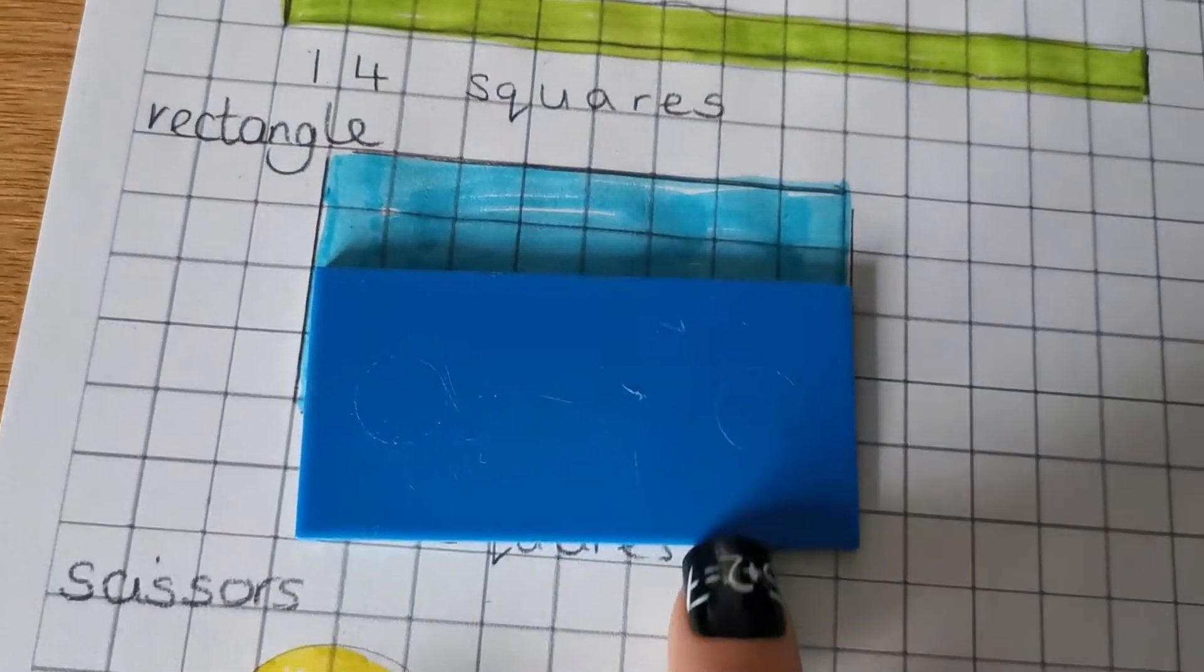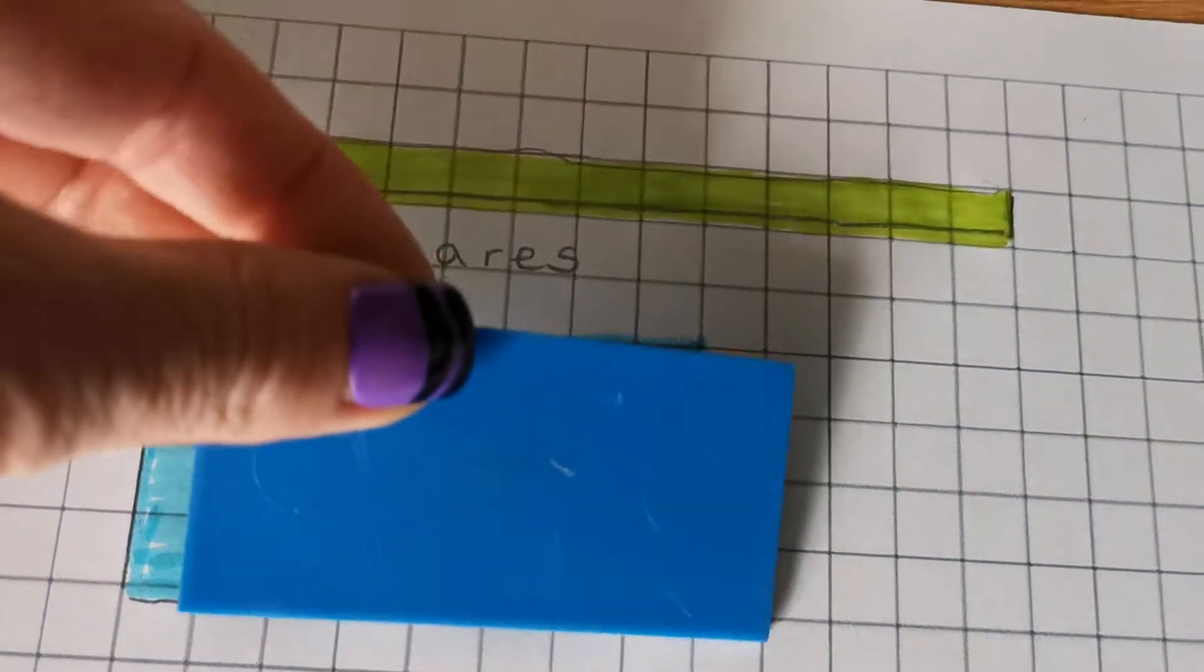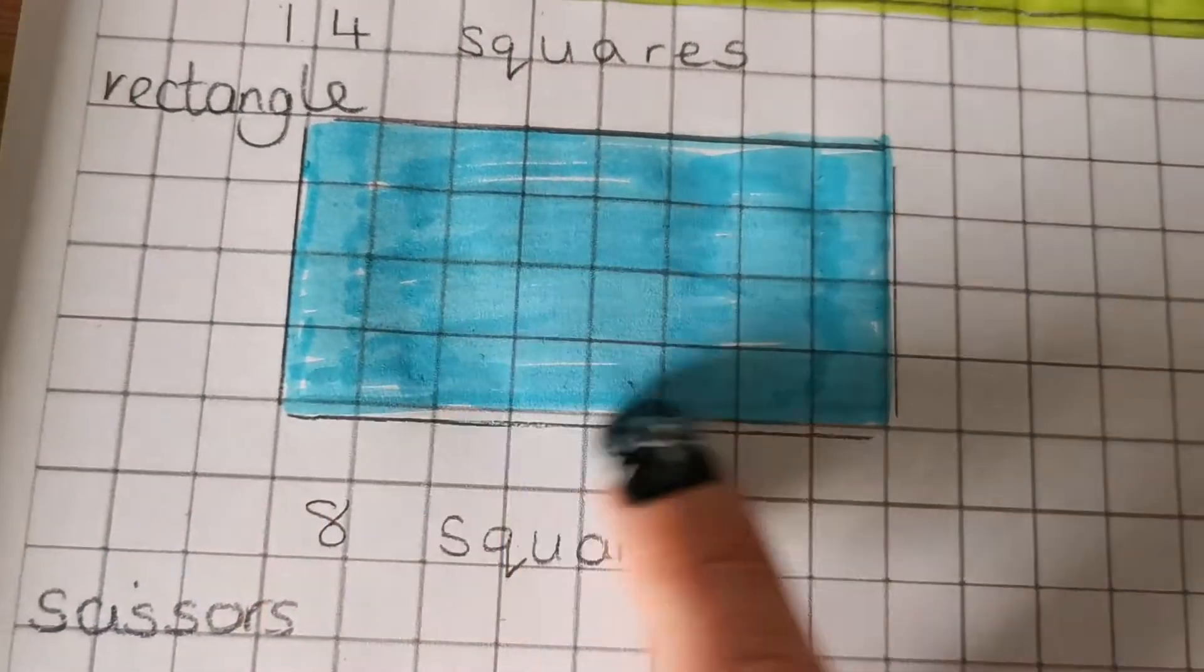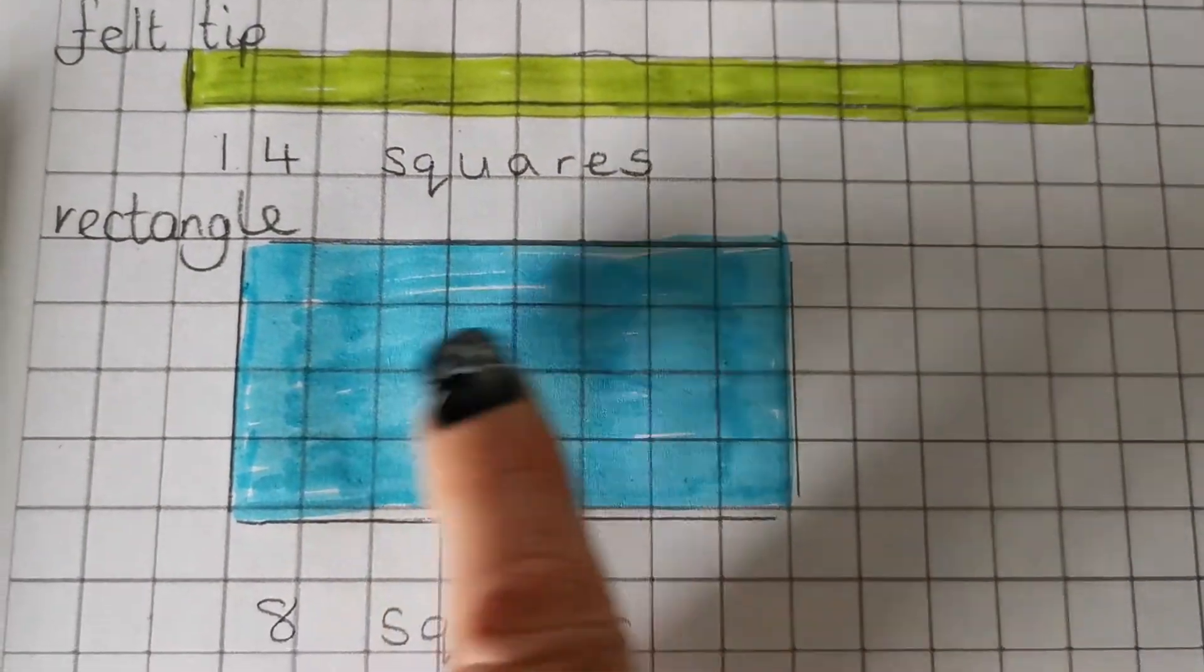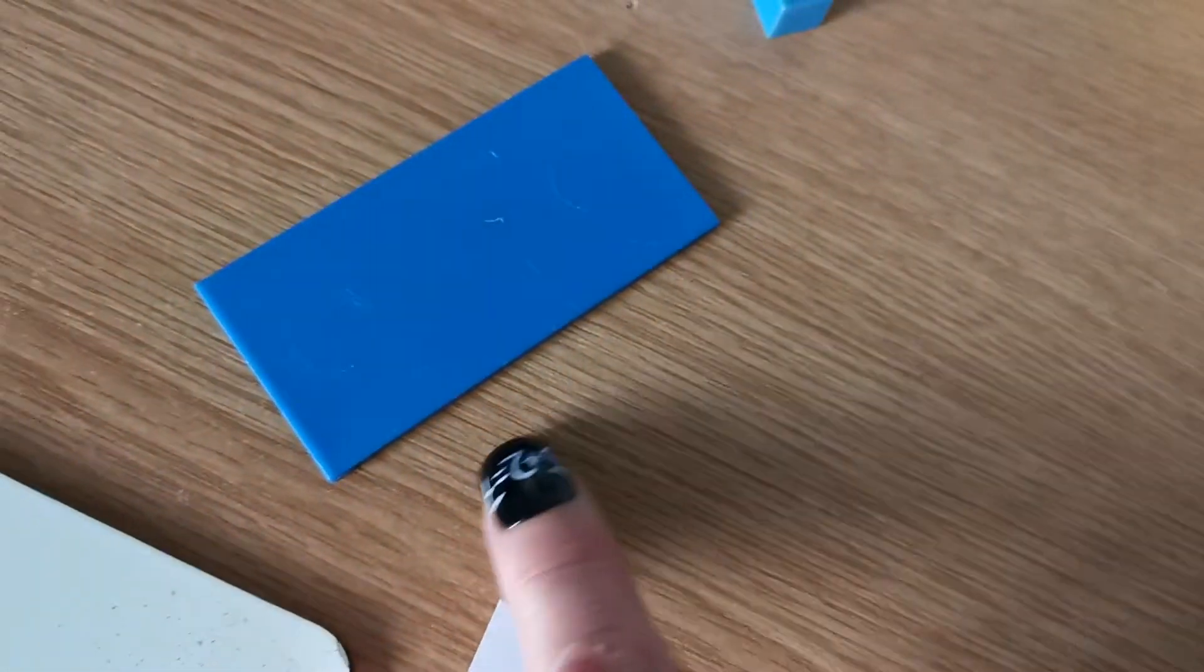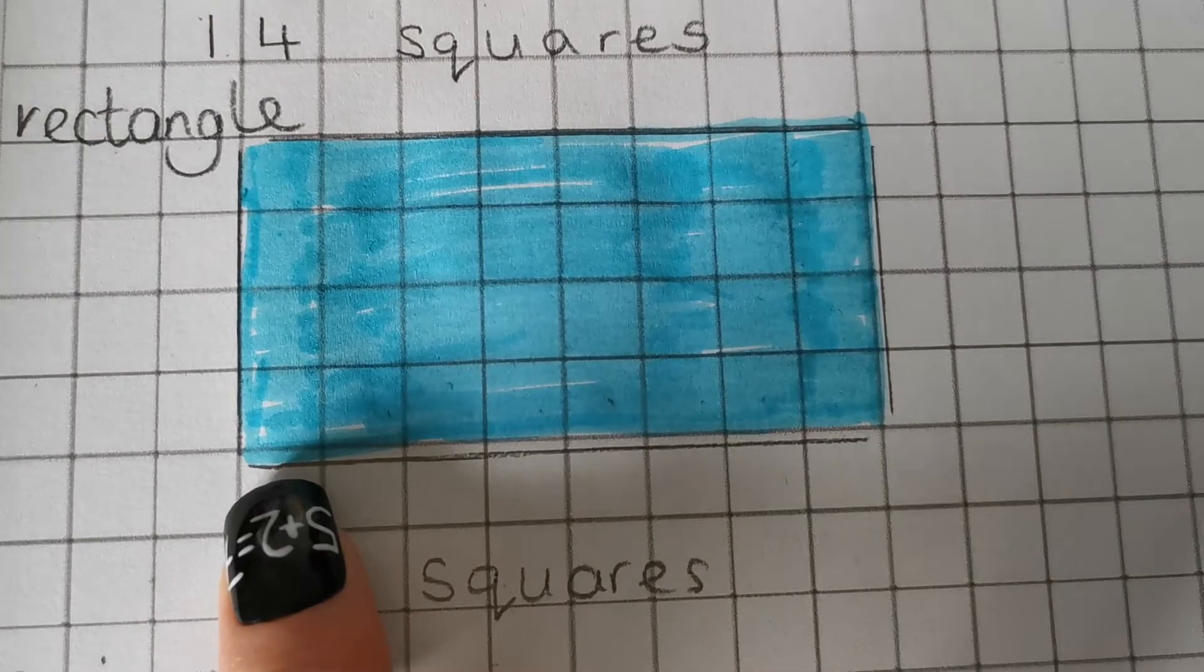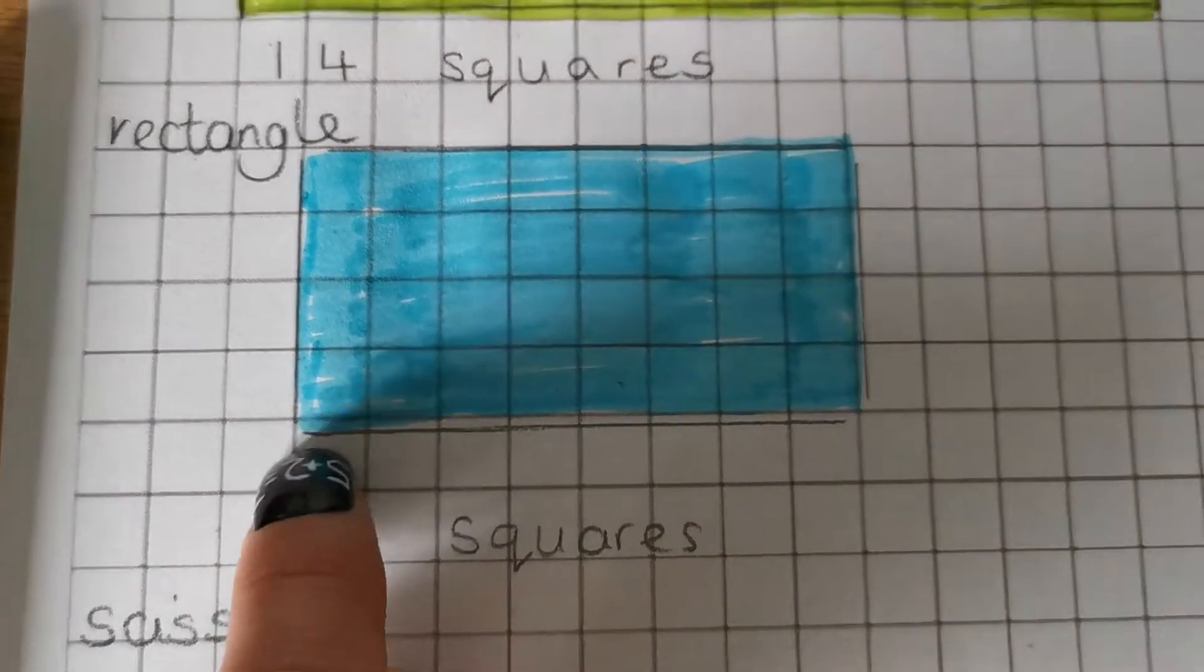Now, the rectangle, I did the same, the blue rectangle. So I drew round it. And then I measured it. But remember, we're measuring how long it is. So we're not measuring all of it. We're not measuring, counting how many squares there are in it. We're just counting how long it is, the length. Now, that is the longest side. So that's the length. That's the side I've measured. So we always use the longest part to measure the length. So I've counted these squares, how many squares across it is.